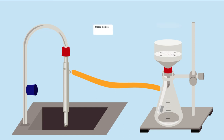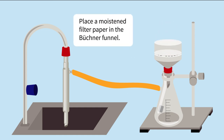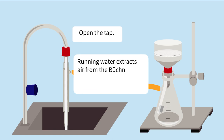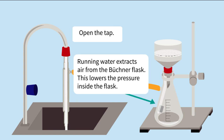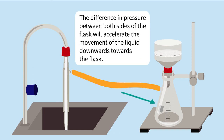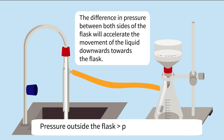Place a moist filter paper in the Büchner funnel and open the tap — running water extracts air from the Büchner flask, lowering the pressure inside. The difference in pressure between both sides accelerates the movement of liquid downwards toward the flask, as the pressure outside is greater than inside.